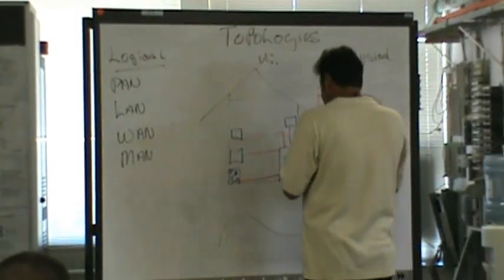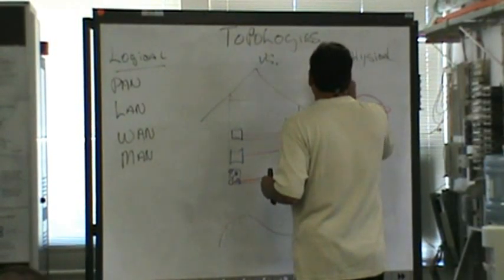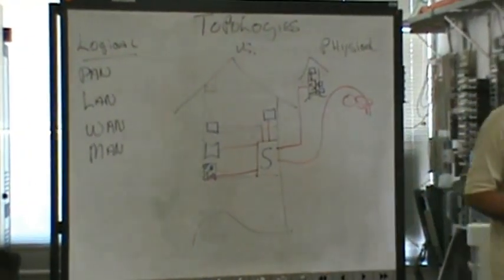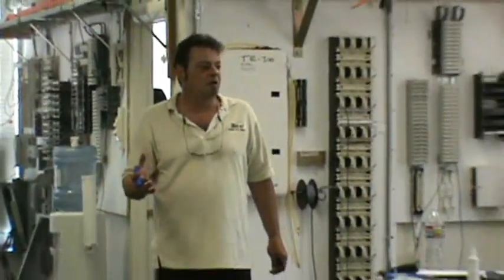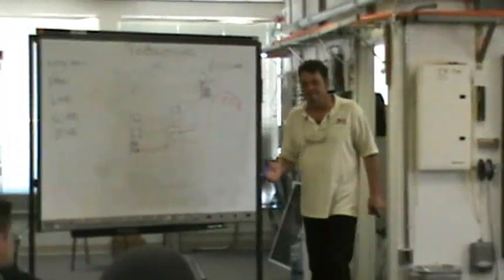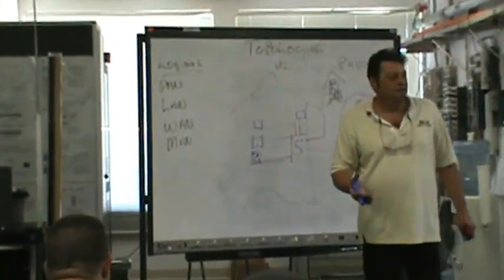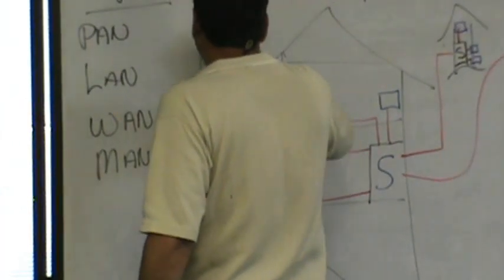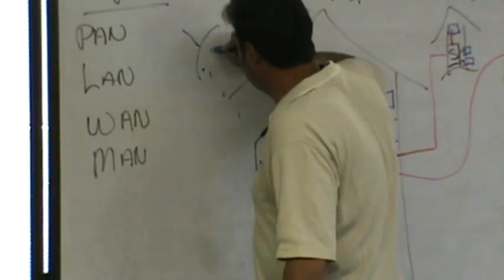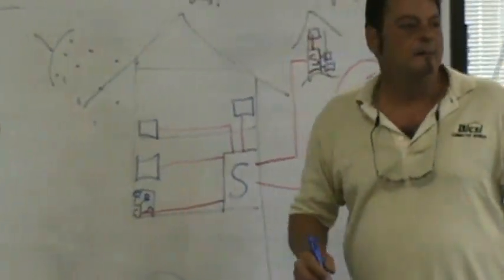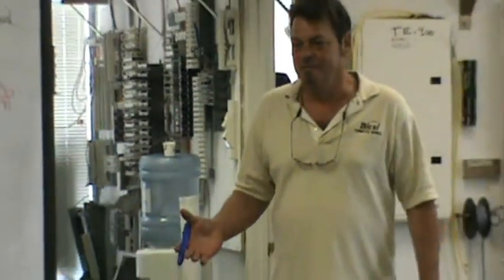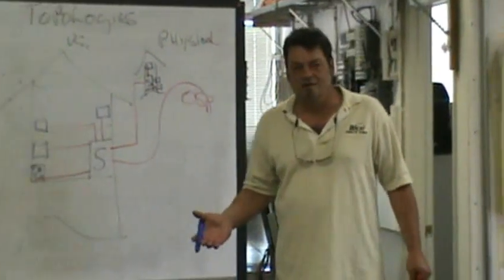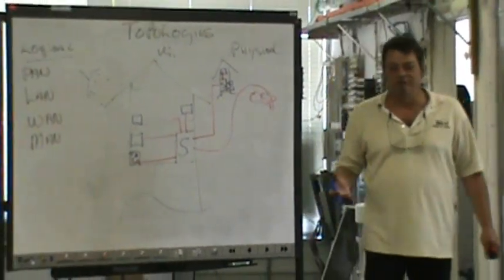A wide area network. Now the one that people always forget is the MAN. Do you know what the MAN is? The MAN is a dish in most cases. It's the Metropolitan Area Network. San Jose, for instance, has a Metropolitan Area Network where anywhere in the city you can get on wirelessly. That's part of the Metropolitan Area Network.